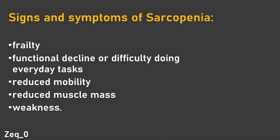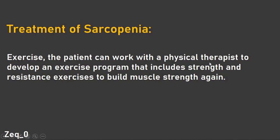Signs and symptoms of sarcopenia are frailty, functional decline or difficulty doing everyday tasks — the person might need someone to help him do usual everyday tasks — reduced mobility, reduced muscle mass as the muscles in the body start shrinking, and general weakness in the body. Treatment of sarcopenia is usually doing exercises. The patient can work with a physiotherapist to develop an exercise program that includes resistance exercises to build muscle mass again.